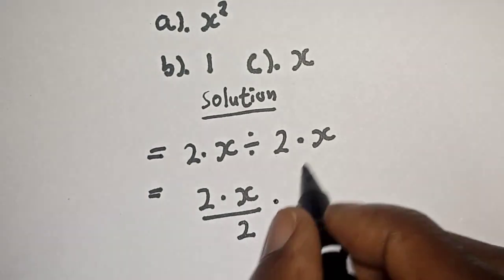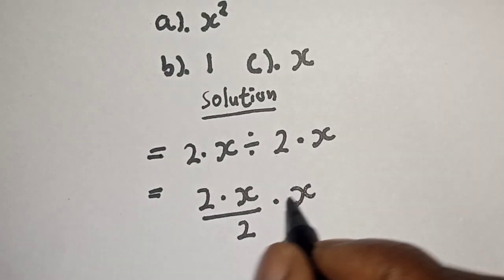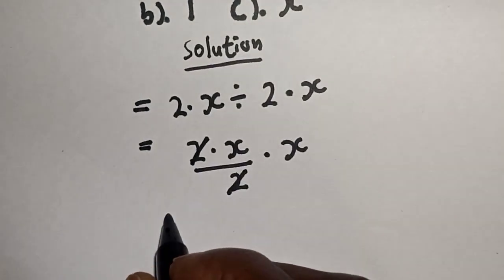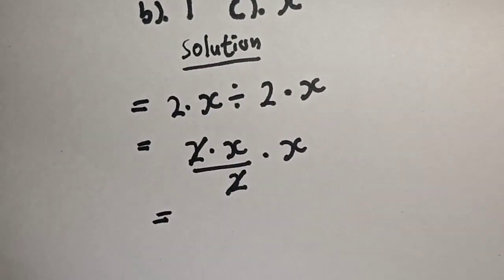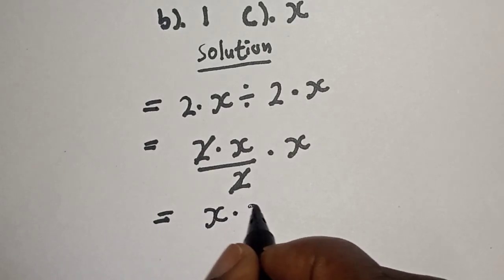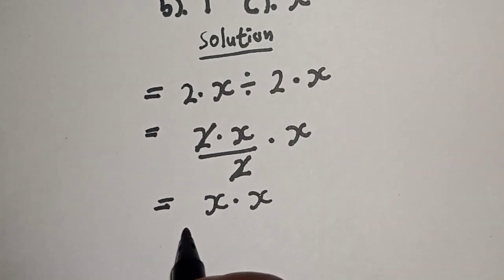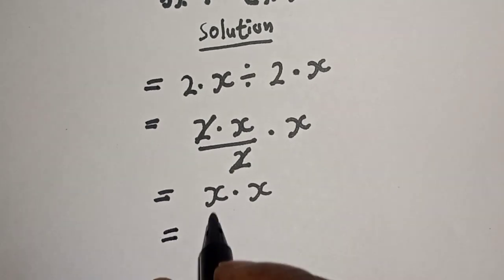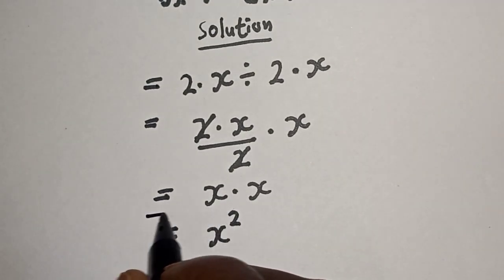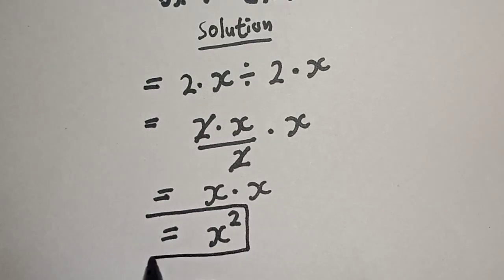x multiplied by x, and x multiplied by x is equal to x squared. This is the final answer. Let's check the options to know the correct one. We have a is equal to x squared - this is correct.